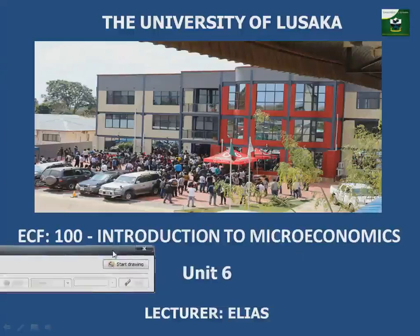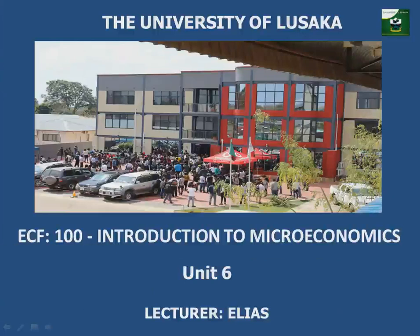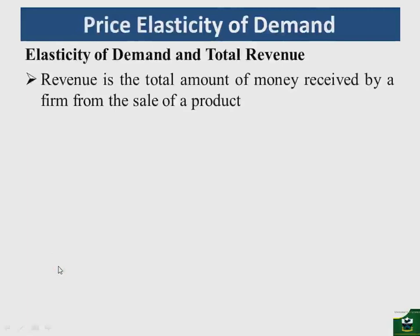In this video we're going to continue with elasticity, and specifically we will look at the relationship between revenue and elasticity. As a brief recap, revenue is simply the total amount of money received by a firm from the sale of a product. If the firm has sold Q units, then revenue R is equal to the price of a given commodity multiplied by the units sold.